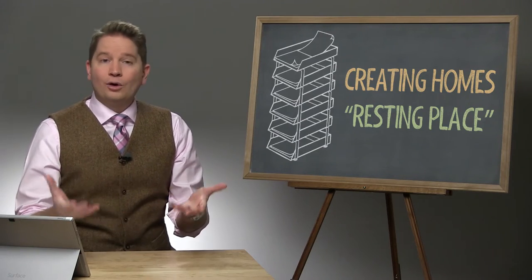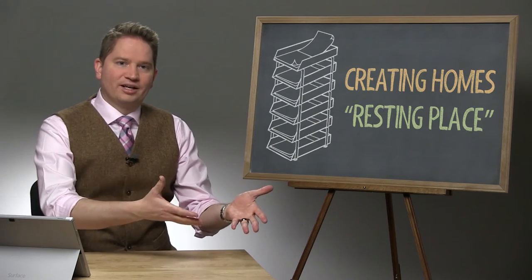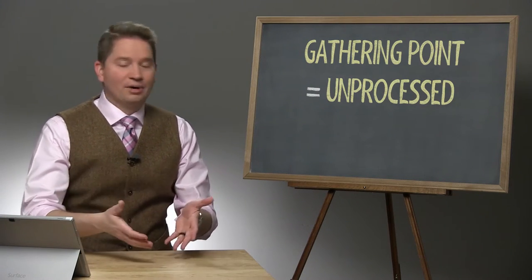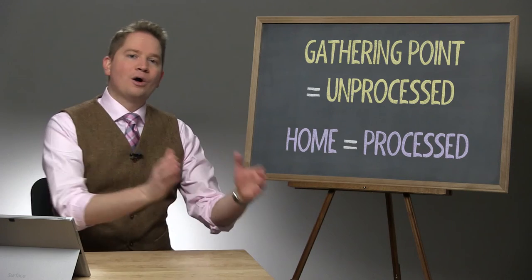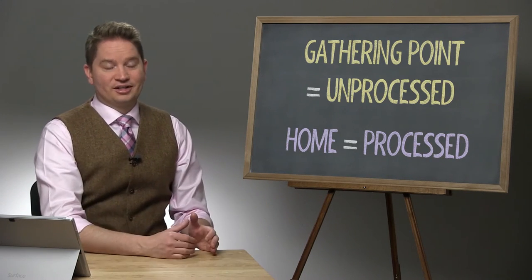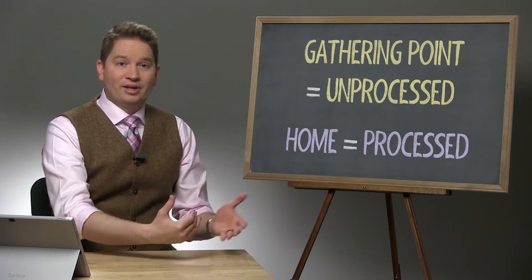The stacking trays are for creating homes. Homes are the resting place for things where you organize them. They're different than a gathering point. Remember, a gathering point is where unprocessed stuff gathers, like your inbox or your email inbox. A home is a place where you put things when you're done processing them so that you can access them later.